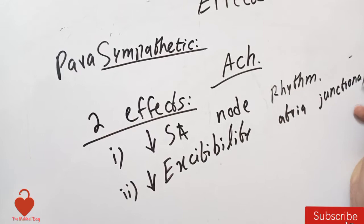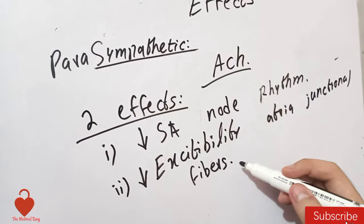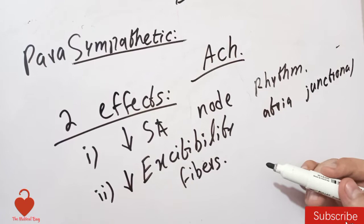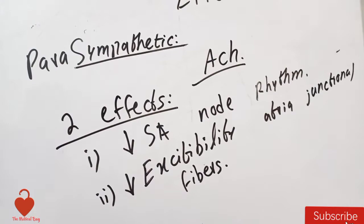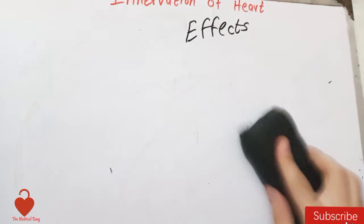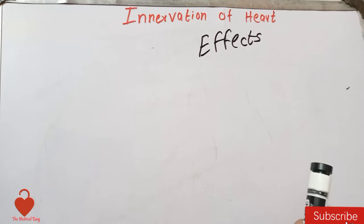The atrial junctional fibers are the fibers that start from the SA node, pass through the atrial musculature, and reach the AV node — basically connecting the atrial musculature to the AV node. By decreasing the excitability of these atrial junctional fibers, the parasympathetic innervation causes a slowing of the transmission of impulses from the atria into the ventricle.